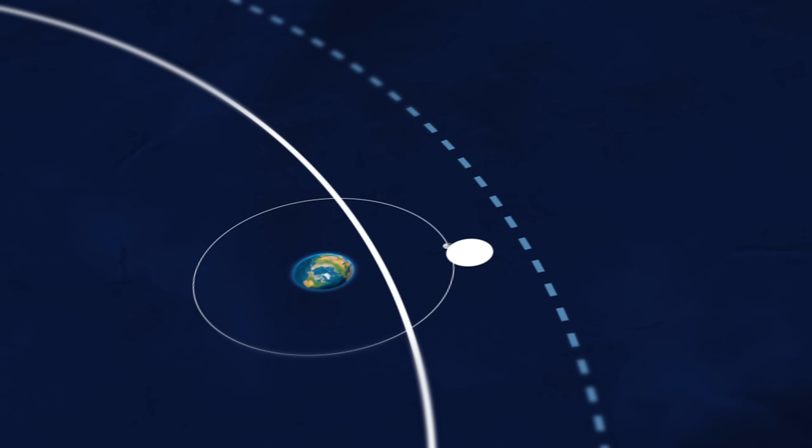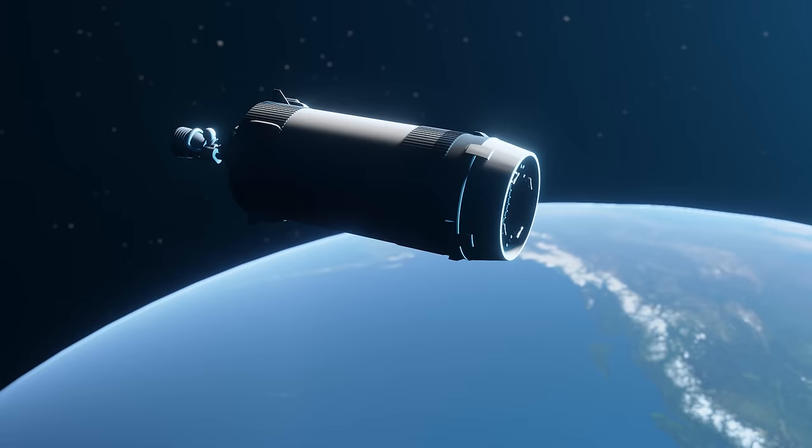For NASA, an orbit like this is a good investment because it means the object won't get in the way of future missions. But things didn't quite work out for Apollo 12.